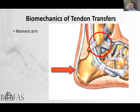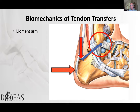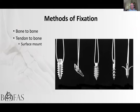Moment arms are critical to consider. The Achilles inserts as far back around the calcaneum as possible because millions of years of evolution have maximized the lever arm for a given amount of pull. When reconstructing with an FHL transfer, inserting it just behind the posterior facet of the subtalar joint gives a very short lever arm; inserting it as far back as possible — without fracturing the calcaneum — gives a much better lever arm. Similarly, for tibialis posterior transfer through the interosseous membrane, the more distal the insertion on the top of the foot, the better the line of pull.